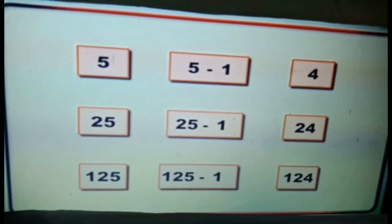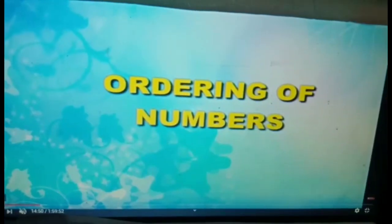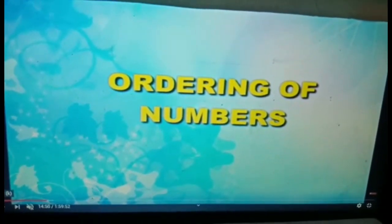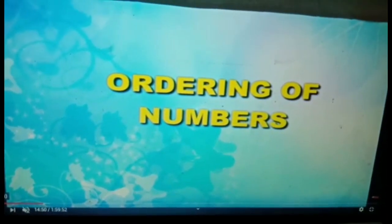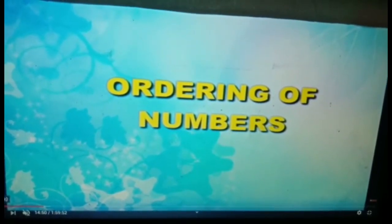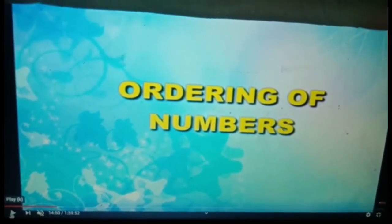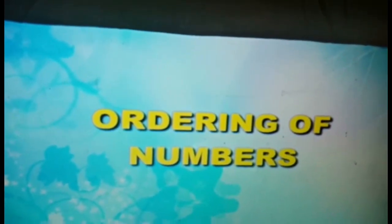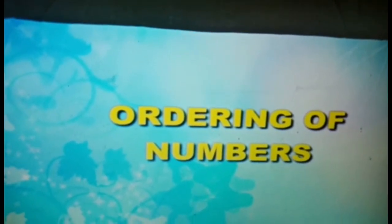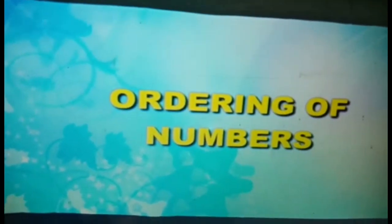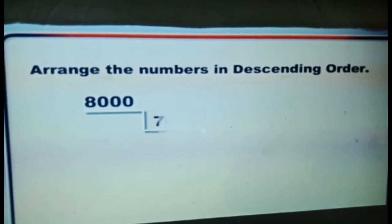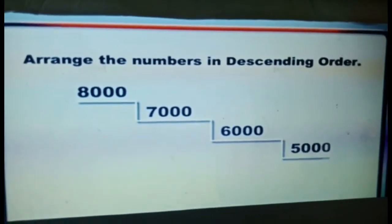Next we have ordering of numbers. There are two types of ordering: ascending order and descending order. Numbers are arranged using comparison rules. When given numbers are arranged from greatest to smallest, it is called descending order. For example: eight thousand, seven thousand, six thousand, five thousand.